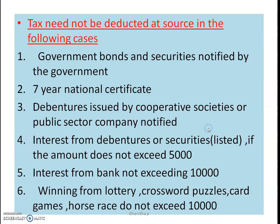Sometimes tax need not be deducted at source in the following cases: government bonds and securities notified by the government, 7-year national certificates, and debentures issued by cooperative societies or public sector companies notified. Interest from debentures or securities listed if the amount does not exceed 5,000. Interest from bank deposits up to 10,000 is not subject to TDS. Winning from lottery, crossword puzzles, card games, and cash links up to 10,000 will not be detected at source.